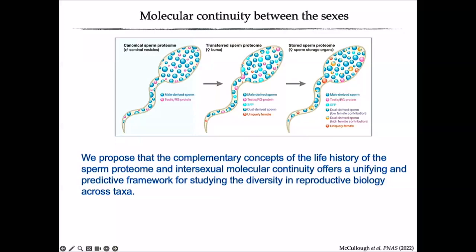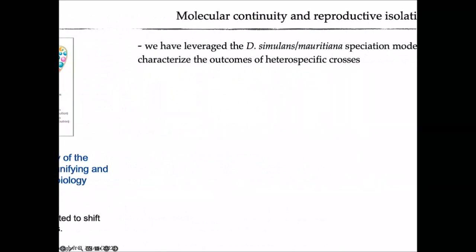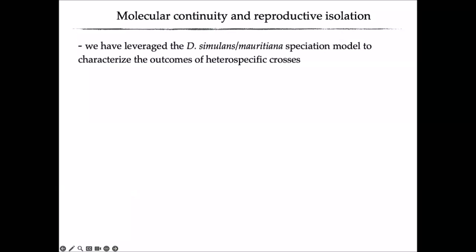To conclude this section: the complementary concepts of the life history of the sperm proteome and intersectional molecular continuity provide a predictive framework for the diversity of reproductive biology across taxa. As the life history of sperm becomes prolonged during evolution, we might predict that genes contributing to spermiogenesis, sperm modification, and sperm metabolism may shift from being male-specific or male-biased to being shared between the sexes. For example, in ants — where sperm may be stored for years or even a decade — does that lead to testable hypotheses regarding the evolution of sex-biased expression?